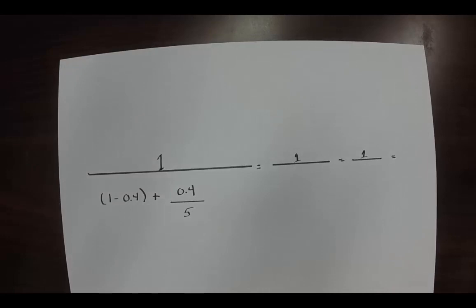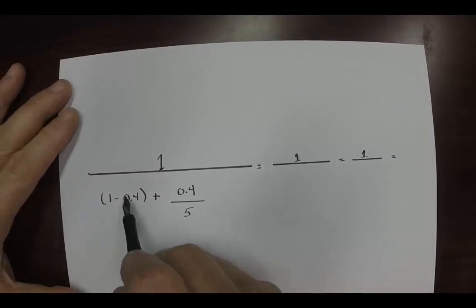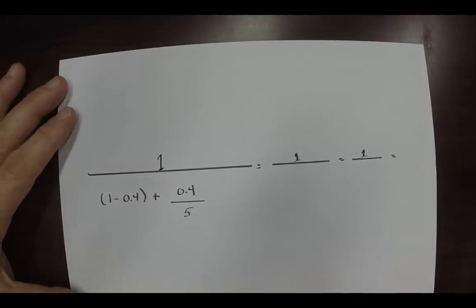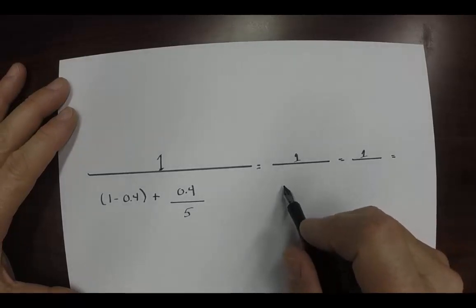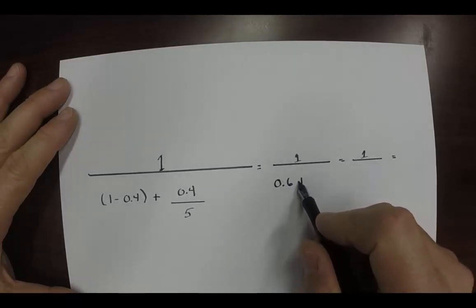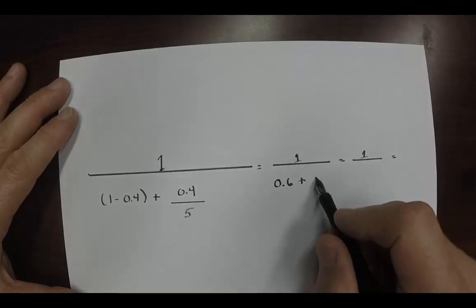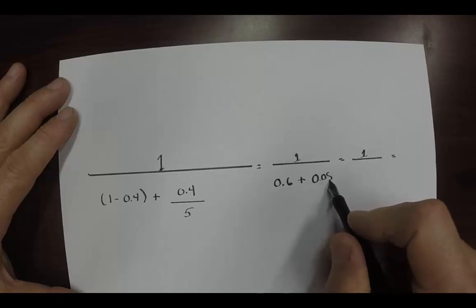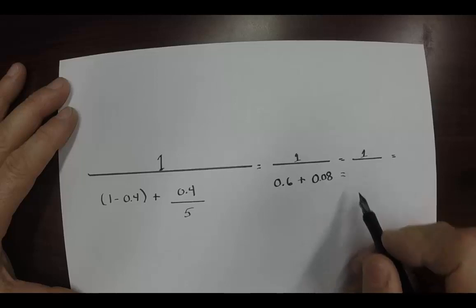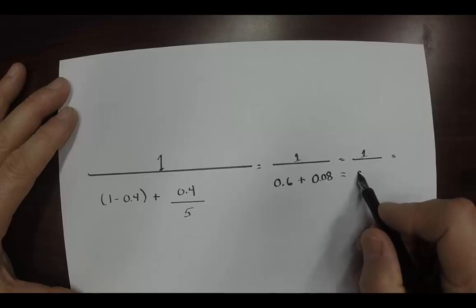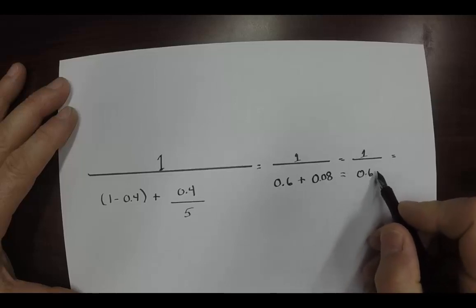Let's go ahead and do these evaluations. One minus point four we know is point six plus zero point four divided by five is point zero eight. Okay, which then we add those together and it is zero point six eight.